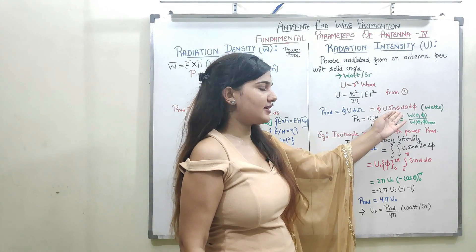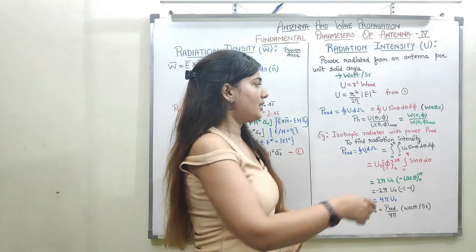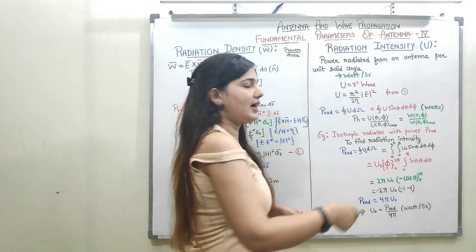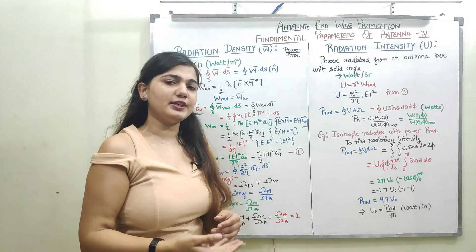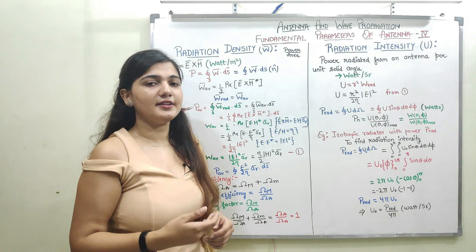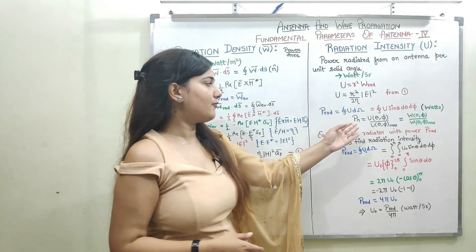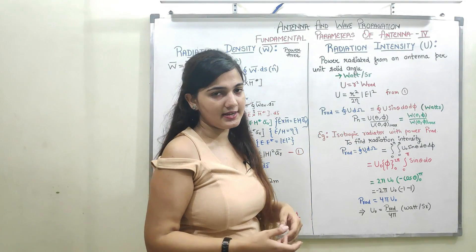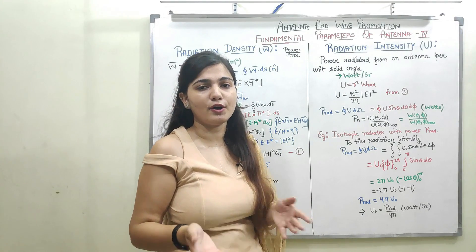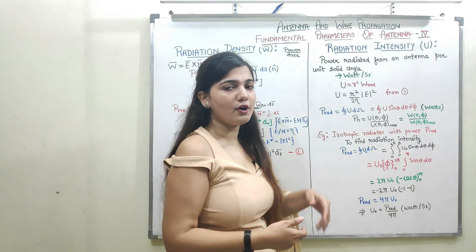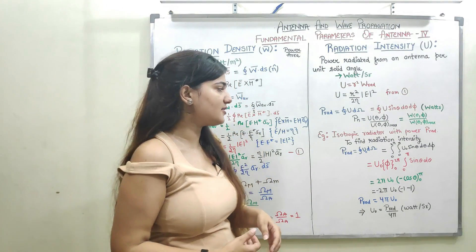Integrating U over sin θ dθ dφ gives the total radiation intensity. The normalized power is given by U(θ,φ) divided by U(θ,φ)_max. Previously, normalized power was expressed as the Poynting vector divided by its maximum value; now we can represent it in terms of radiation intensity as well — radiation intensity at any point (θ,φ) divided by its maximum value gives the normalized power.